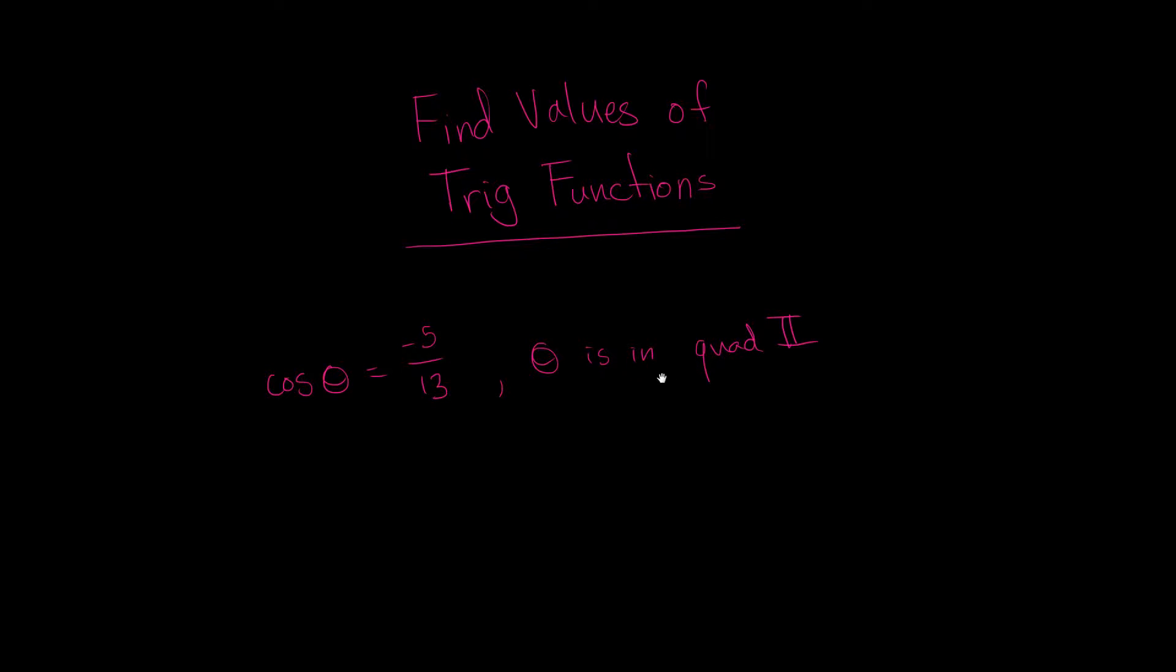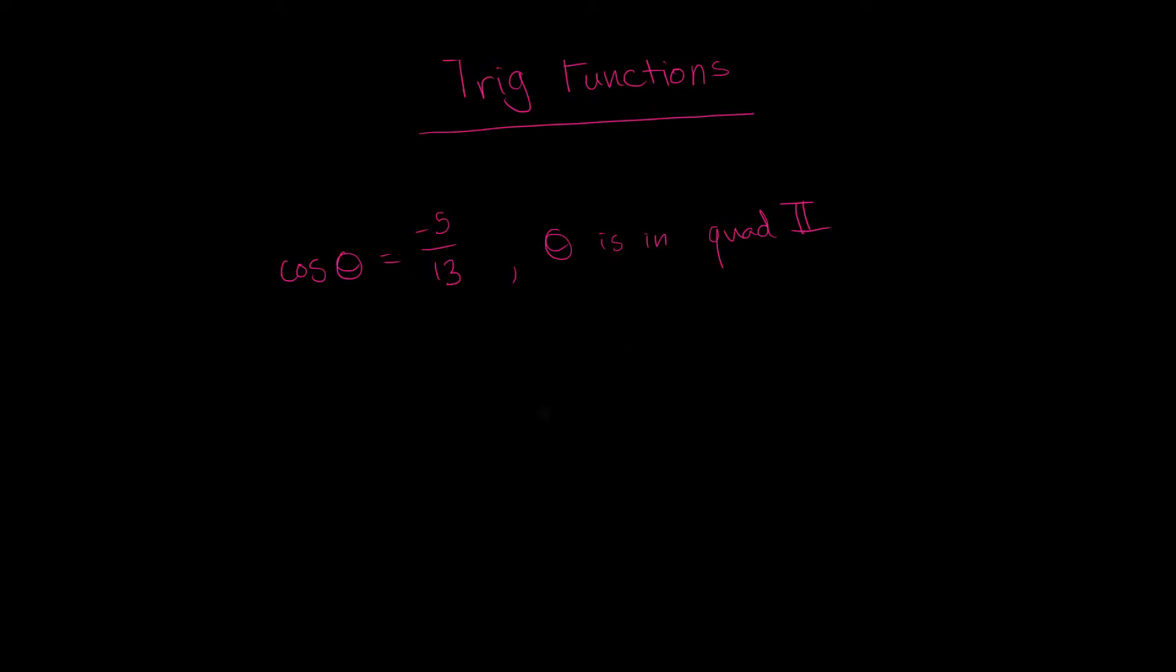Okay, so let's review what our trig functions are. We have SOHCAHTOA, right? Sine is equal to opposite over hypotenuse, cosine is equal to adjacent over hypotenuse, and tangent is equal to opposite over adjacent.